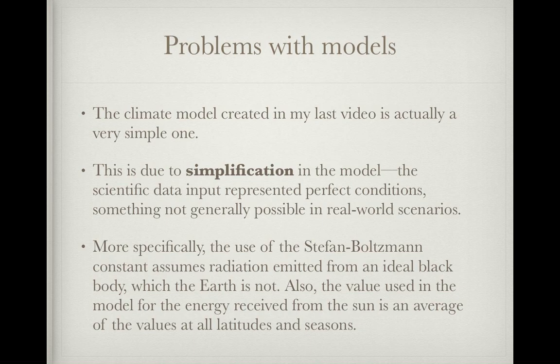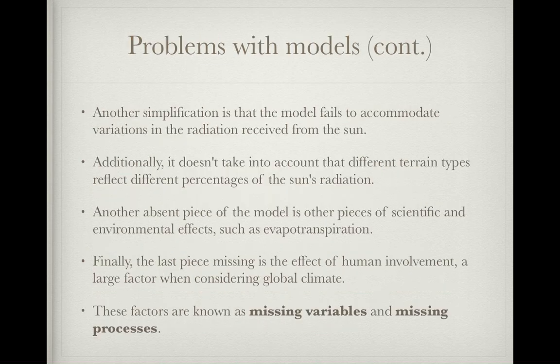In reality, the value used is somewhere around 350, but some places near the equator during the summer receive up to 1,200 units of energy. So this isn't going to be extended very generally — it's not really all that accurate. Another simplification is that the model fails to accommodate variations in the radiation received from the sun, because it fluctuates and isn't exactly a constant number.